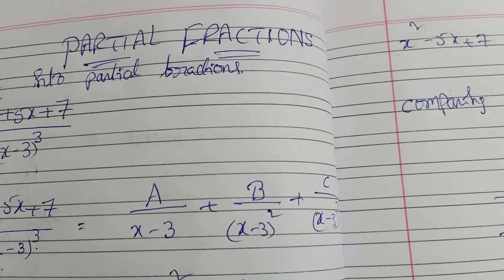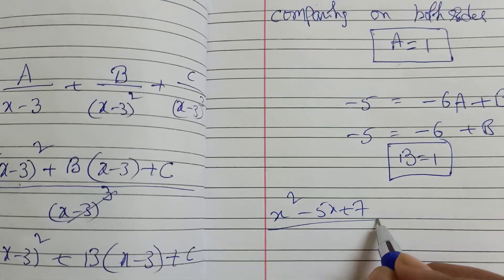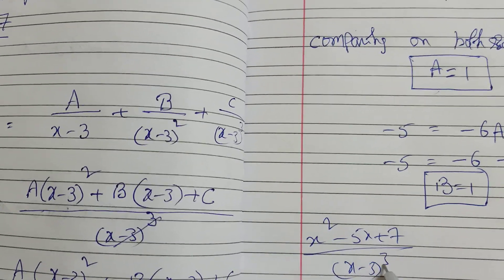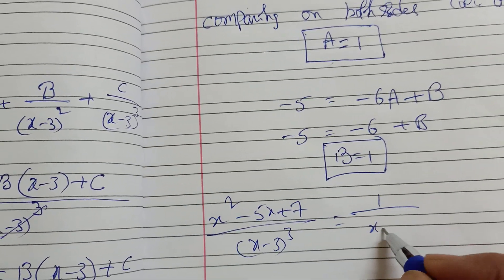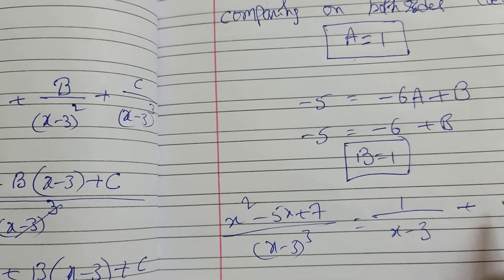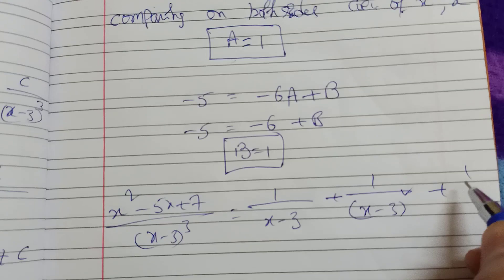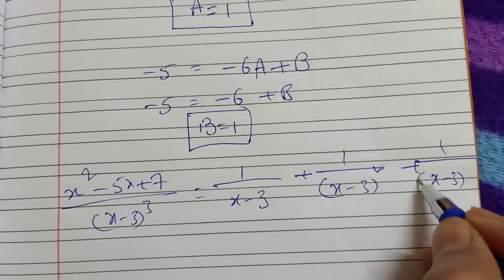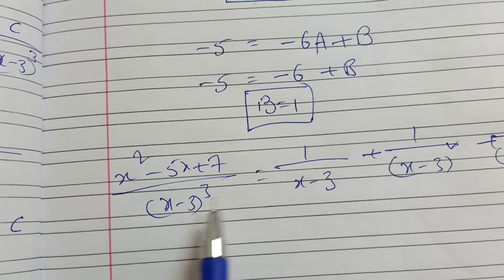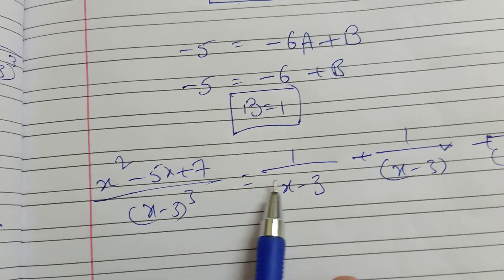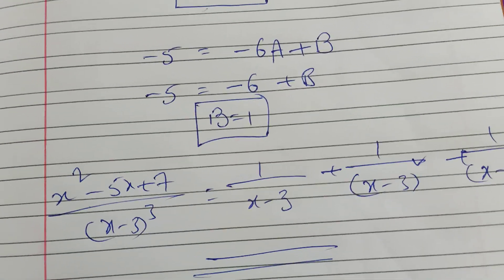So the final answer is: (x squared minus 5x plus 7) divided by (x minus 3) whole cube equals 1 by (x minus 3), plus 1 by (x minus 3) whole square, plus 1 by (x minus 3) whole cube. This is the partial fraction decomposition.